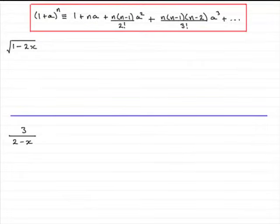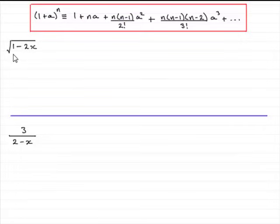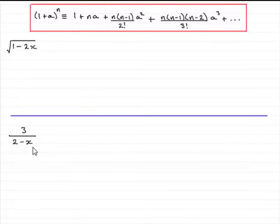Welcome to this tutorial on using the binomial expansion formula for expanding expressions like square roots, cube roots, fourth roots, and so on. We'll look at the square root of 1 minus 2x, and also at expanding fractional expressions like 3 over 2 minus x.